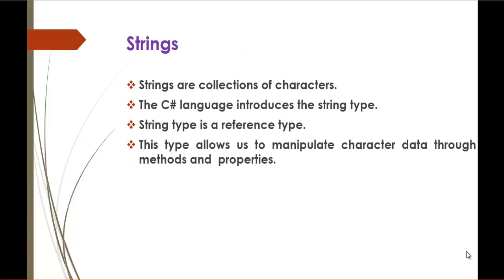Strings are a collection of characters. It means that strings represent a group of characters. To tell it simply, a character can be an alphabet, and that collection of alphabets together we call a string. C-Sharp introduces the string type. The third point is, string type is a reference type. In the previous session, we discussed that data types are classified into two things: value type and reference type, and string falls under the reference type.